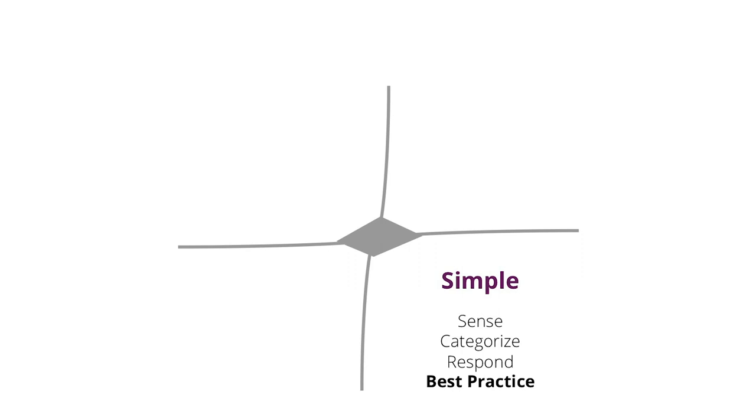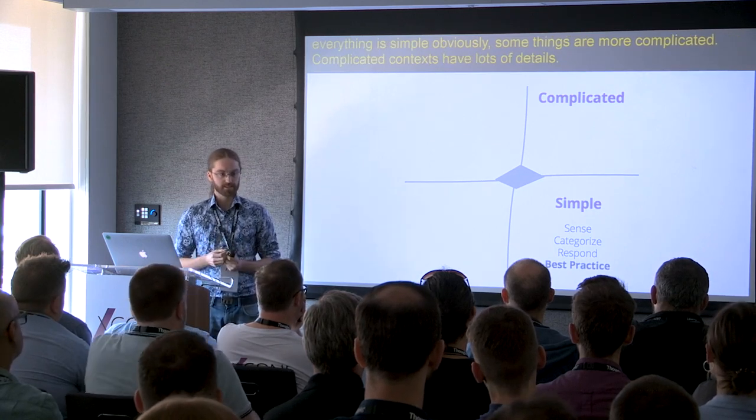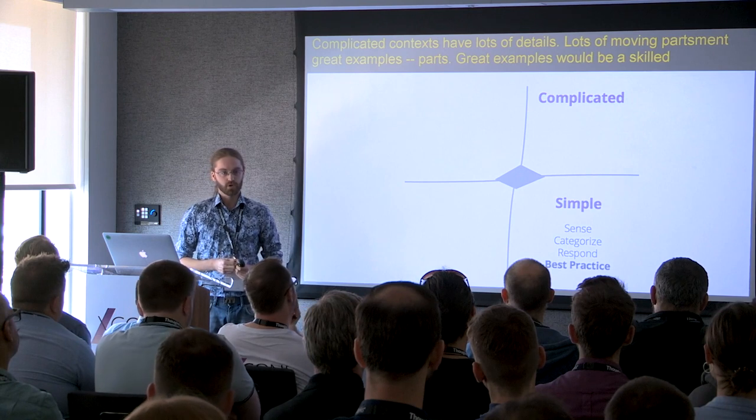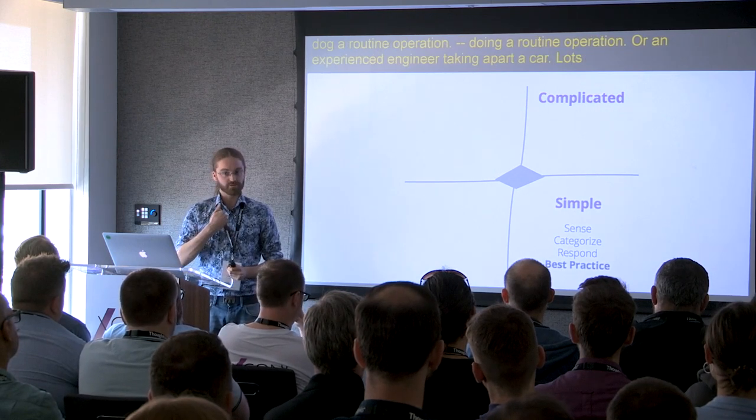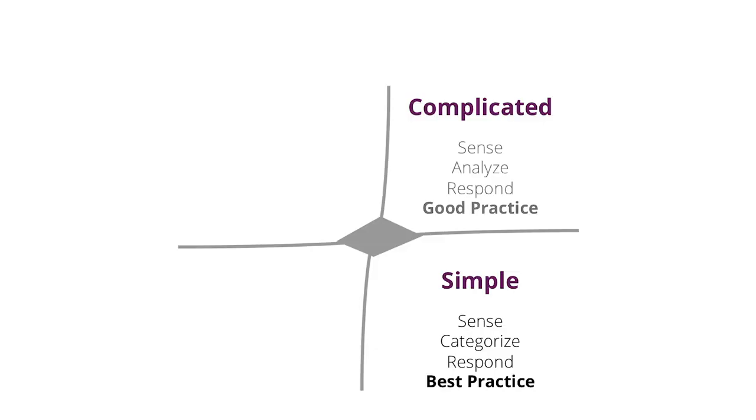Not everything is simple. Obviously, some things are a little bit more complicated. Complicated contexts have lots of details, lots of moving parts. Great examples would be a skilled surgeon doing a routine operation or an experienced engineer taking apart a car. Lots of details—I couldn't do either of those—but they're manageable. Cause and effect exist here, but everything is a little bit harder. You have to look at the world, analyze it, figure out, apply your experience and expertise, and then figure out what to do. There's still good practice—don't hit the car with a big mallet—but this isn't the kind of world that can be explained with a flow chart.